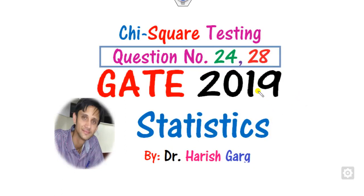Hello everyone, welcome to the next lecture on the GATE 2019 statistics paper. Today we will discuss question numbers 24 and 28 related to the chi-square test in GATE statistics.